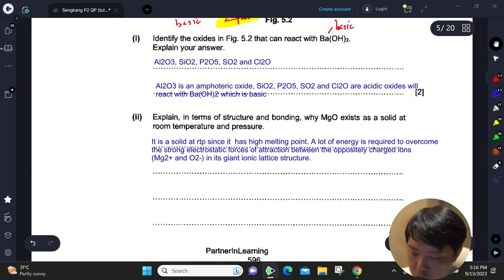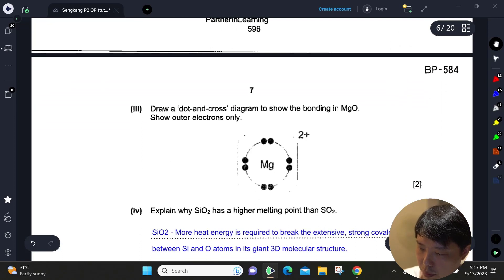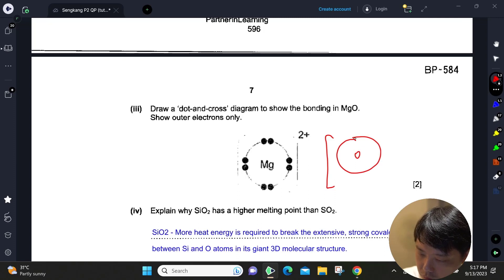Explain in terms of structure and bonding why MgO exists as a solid at room temperature and pressure. Why does it exist as a solid? Very simple—because it is an ionic compound. So you just need to describe in terms of ionic compound: a lot of energy is required to overcome the strong electrostatic force of attraction between oppositely charged Mg²⁺ and O²⁻ in a giant ionic lattice structure. The dot-and-cross diagram here—apologize—there should be one more with oxygen, one, two, three, four, five, six, seven, eight electrons, and the two electrons from magnesium.